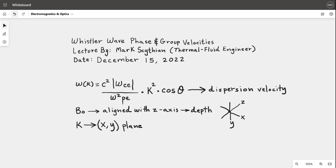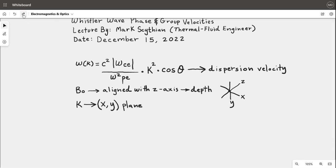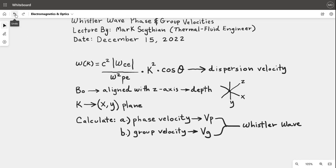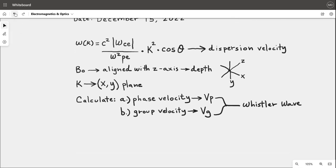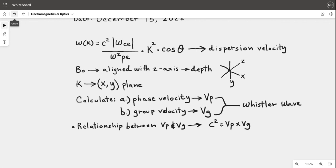The details behind what every component represents should be looked at as individual components. You're asked to calculate a) the phase velocity vp and b) group velocity vg as a Whistler wave function. The relationship between the phase velocity and group velocity is represented by the speed of light squared, which is actually the phase velocity times the group velocity.